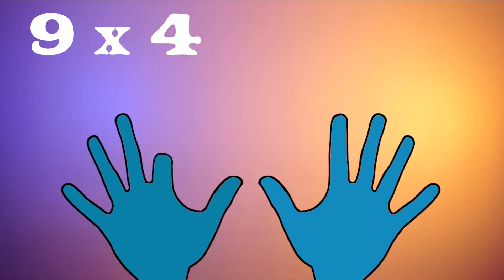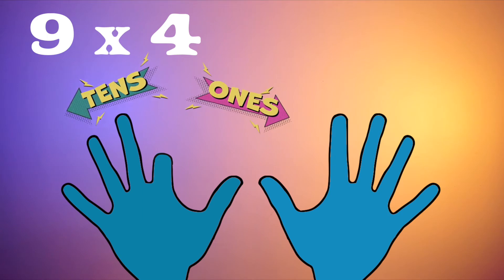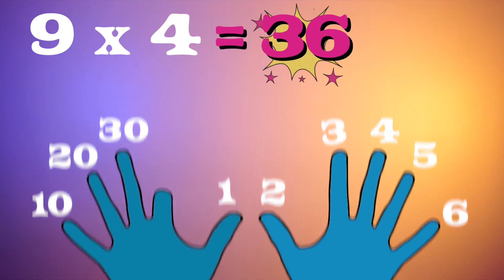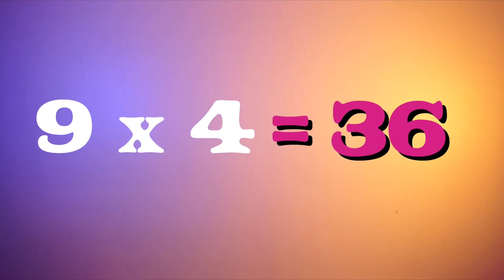Great! Now the fingers to the left of the bent finger are the tens place, and the fingers to the right are the ones. So we've got 10, 20, 30, and to the right we've got 1, 2, 3, 4, 5, 6. Put that together and you get 36. Nine times four is 36! Now it's your turn to give it a shot.